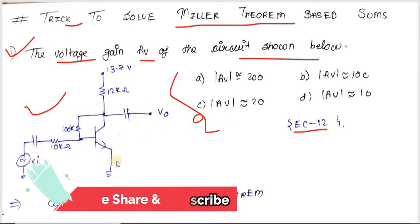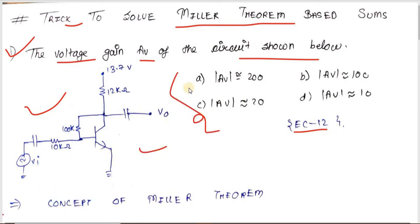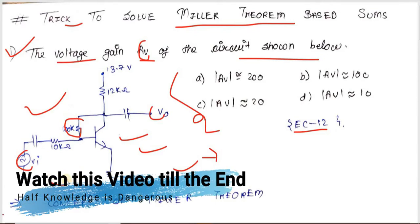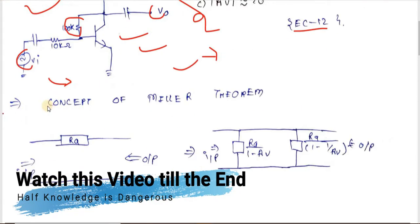From this circuit we have to find the voltage gain Av, where Av = Vo/Vi. The interesting thing in the circuit is that a resistor is present between the input and output ports. To resolve this resistor, we have to use the concept of Miller's theorem.